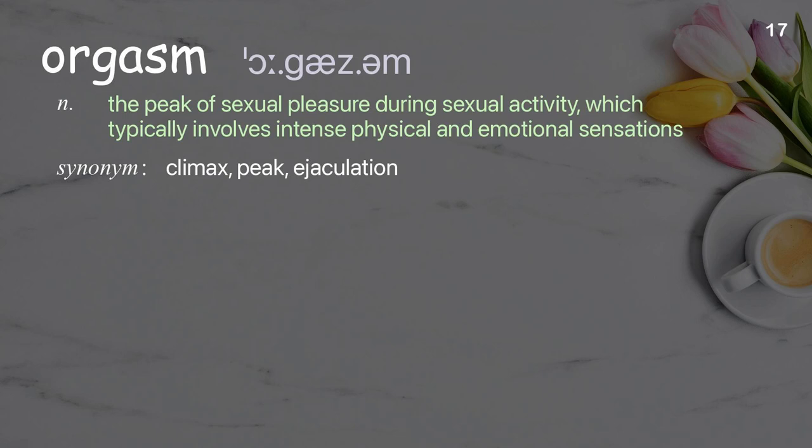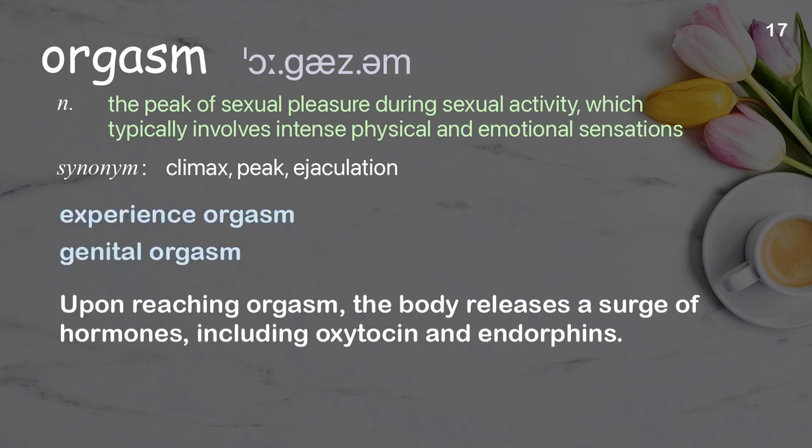Orgasm: the peak of sexual pleasure during sexual activity, which typically involves intense physical and emotional sensations. Examples: experience orgasm, genital orgasm. Upon reaching orgasm, the body releases a surge of hormones, including oxytocin and endorphins.